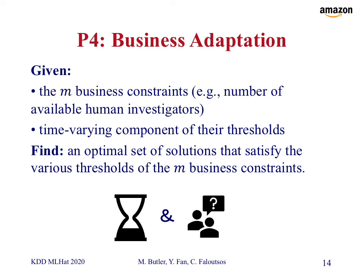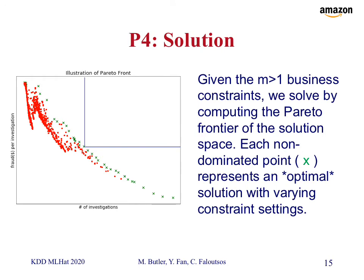For subproblem four, business adaptation: we're given M business constraints — for example, the number of available human investigators — and the time-varying thresholds for those constraints. We want to find an optimal set of solutions satisfying the various thresholds of the M business constraints. Our solution is to compute the Pareto frontier of the solution space, accounting for each of the M constraints. Each point on the Pareto frontier represents a non-dominated optimal solution under different constraint settings. As business constraints change dynamically and unpredictably, we move along this Pareto frontier to find different optimal solutions. The Pareto frontier can be computed using grid search or heuristic optimization algorithms like particle swarm optimization, as we had done.